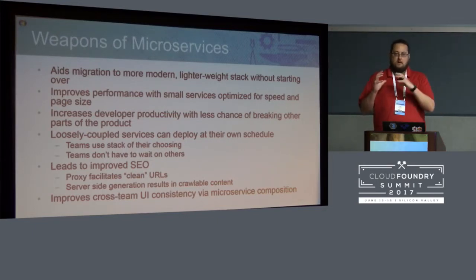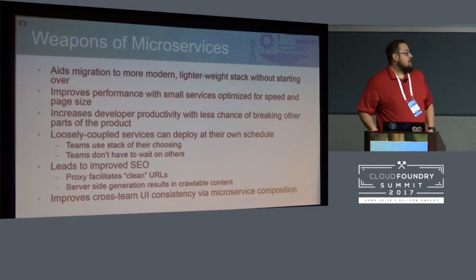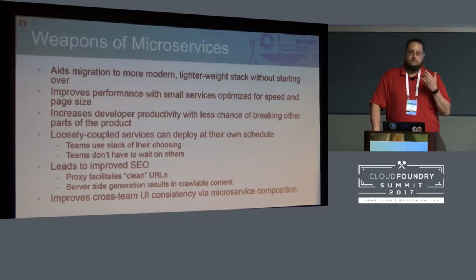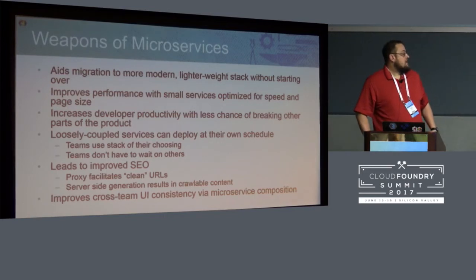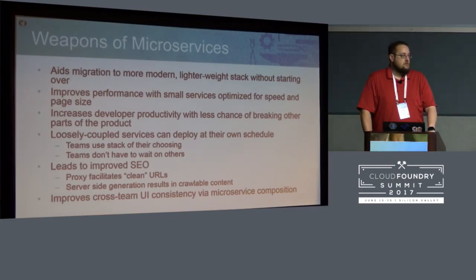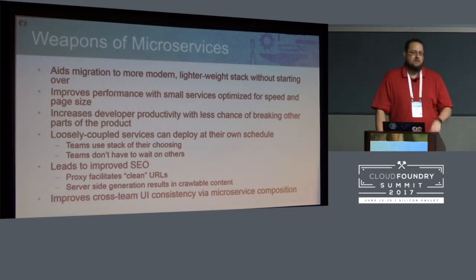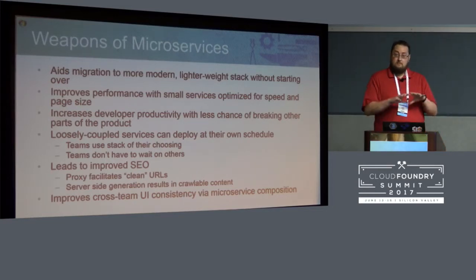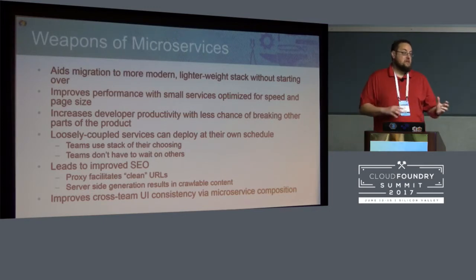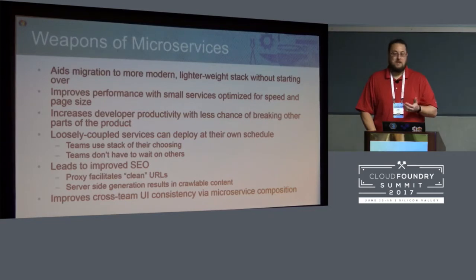The goal is to break the monolith into smaller services to improve performance, because these services can be optimized for speed and page size. This architecture would increase developer productivity — you can push smaller changes with less chance of breaking the entire product. Loosely coupled services can deploy on their own schedule. Teams can use the stack of their choice as they plug in, and you don't have to wait on others. We have about 25 microservices, with core components like catalog and dashboard plus many teams that want to do custom things.